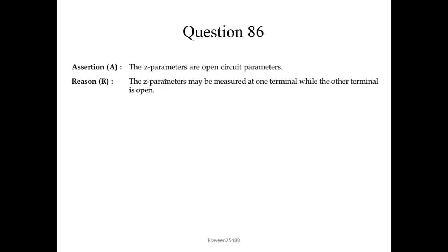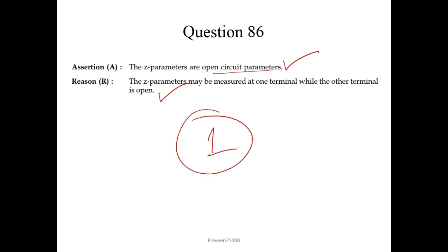Question 86. The Z parameters are open circuit parameters — correct statement, as we have seen in previous questions. The Z parameters may be measured at one terminal while the other terminal is open — also correct. And because of this they are called open circuit parameters. So we choose option 1.